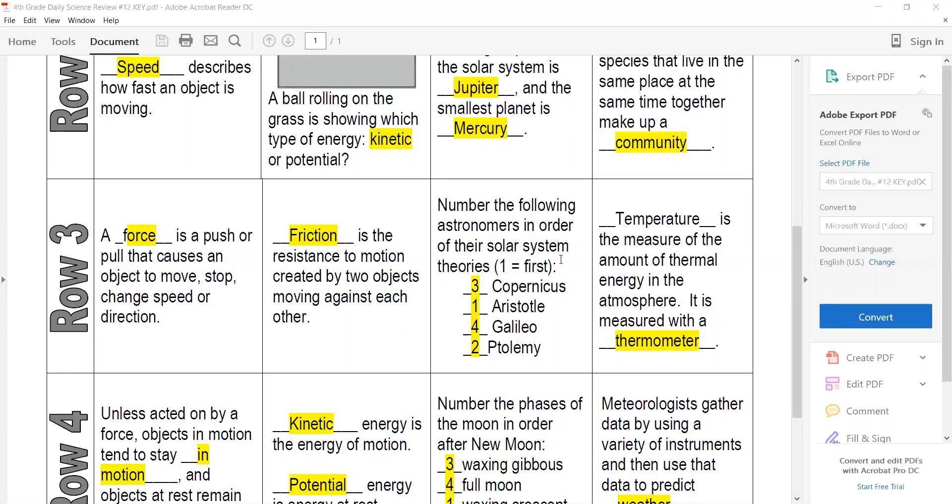Based off their theories, you need to put them from who was first to who was last. So Aristotle was first, then Ptolemy. Remember they both believed that the Earth was the center of the solar system. Then we had Copernicus and Galileo, and they believed that the sun was the center.